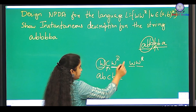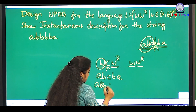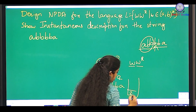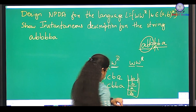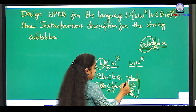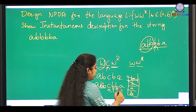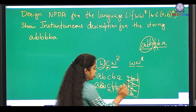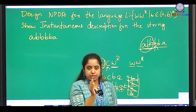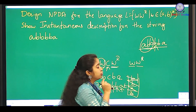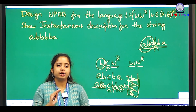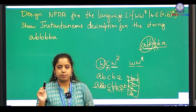For example, with 'abbcbba': you push everything onto the stack — Z0, a, b, b — and when you encounter c, you understand to start popping: b matches, pop it; a matches, pop it; end of string, you reach the final state. But in ww^r, when to stop pushing and when to start popping is not sure. For this kind of language, you cannot design a deterministic PDA.